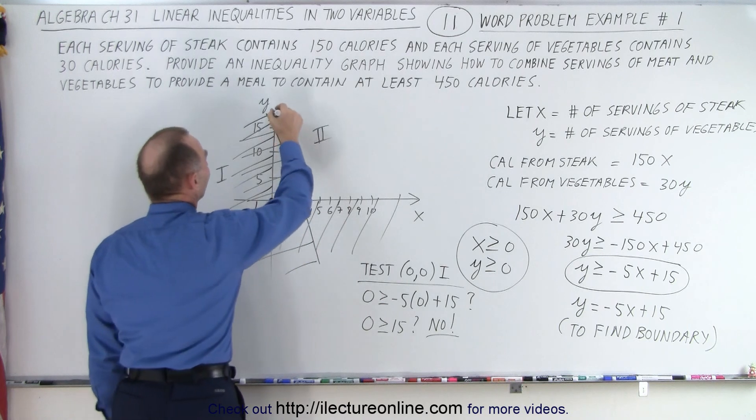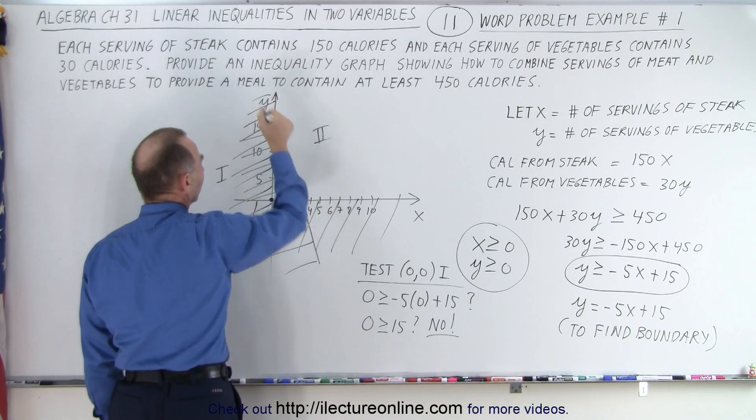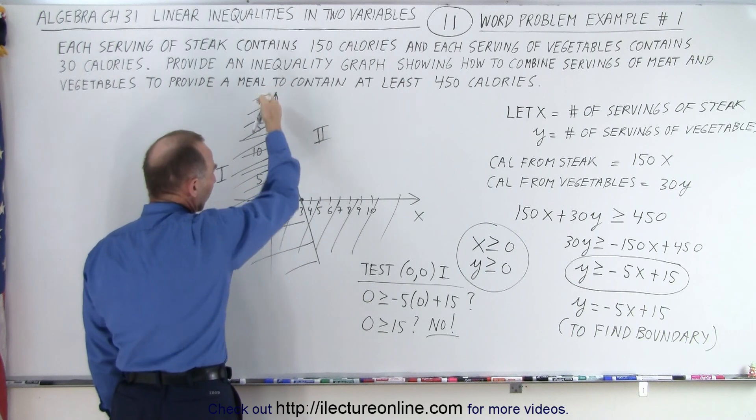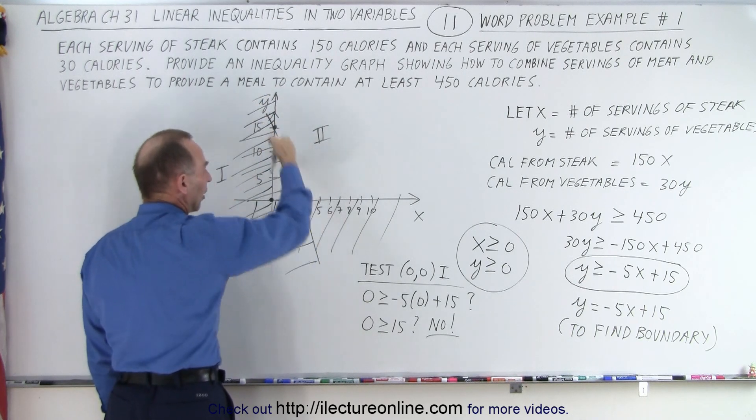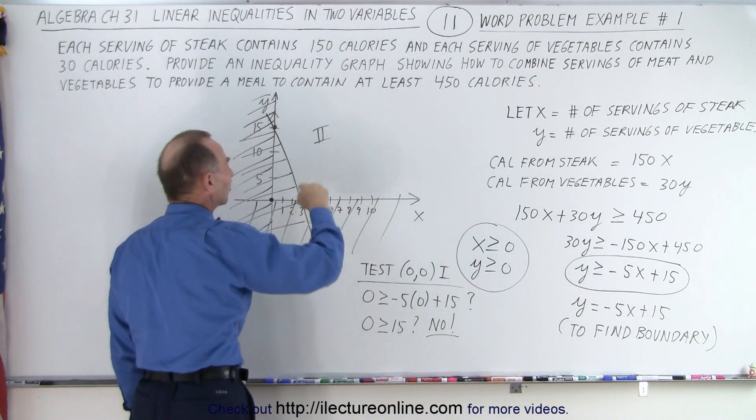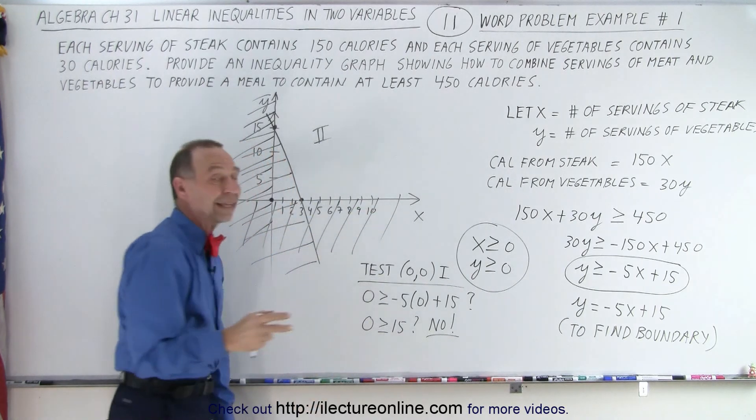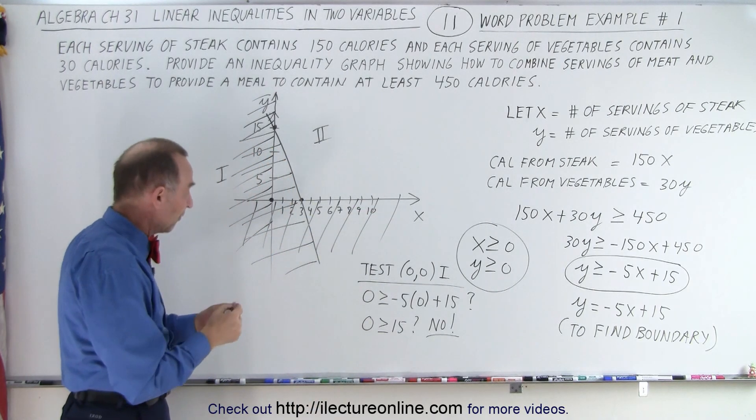The only region that we have left would be to the right of the y-axis, to the right of the line represented by the boundary of our inequality, and above the x-axis. So anywhere in here, we can put a meal together that gives us at least 450 calories.